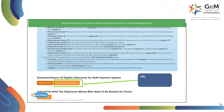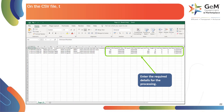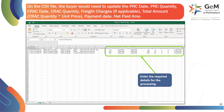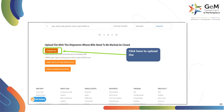Click on view generated reports to download the generated report. On the CSV file, the buyer would need to update the PRC date, PRC quantity, CRAC date, CRAC quantity, freight charges if applicable, total amount, CRAC quantity, unit price, payment date, net paid amount, and deductions. Click on choose file to upload the updated CSV file.